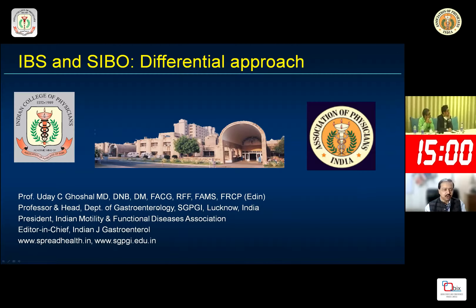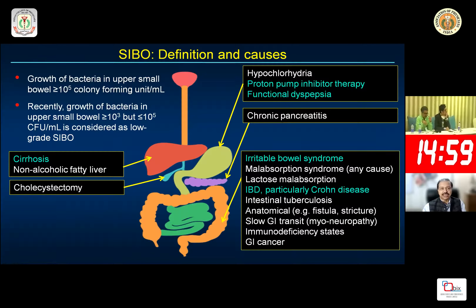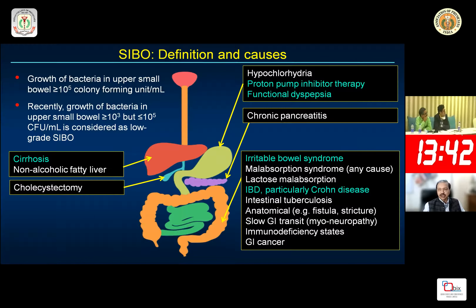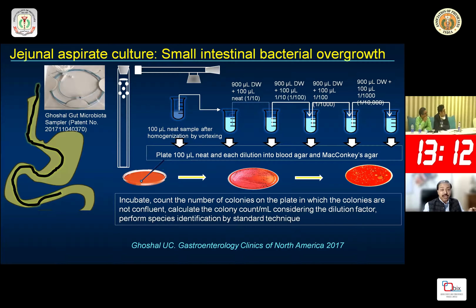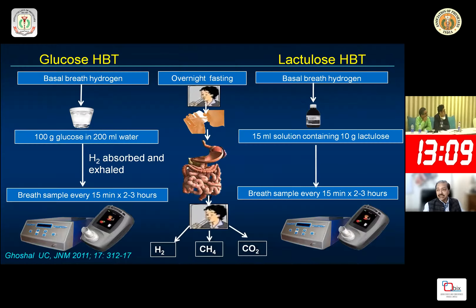I'll be talking about IBS and SIBO — the differential approach. SIBO stands for Small Intestinal Bacterial Overgrowth, which occurs in several GI diseases including irritable bowel syndrome. SIBO is defined when a culture of upper gut aspirate from the duodenum or jejunum shows overgrowth of bacteria greater than 10 to the power 5 colony forming units per milliliter of jejunal aspirate.